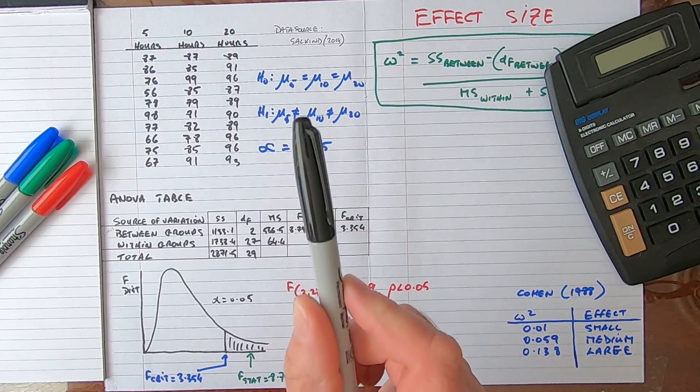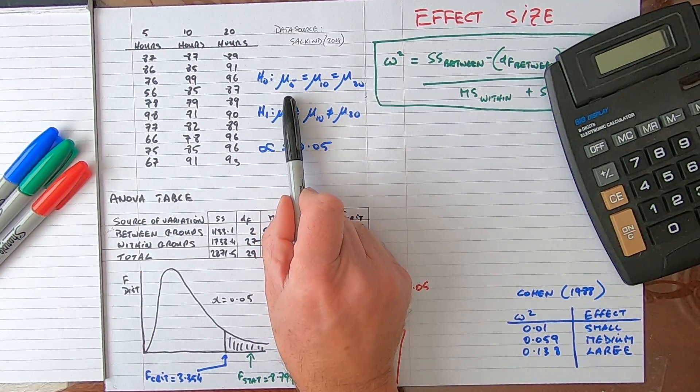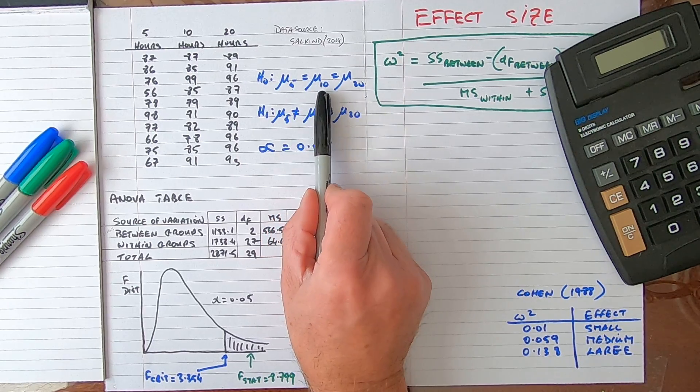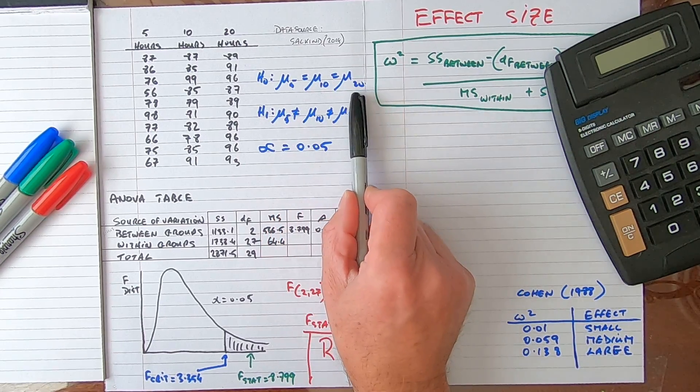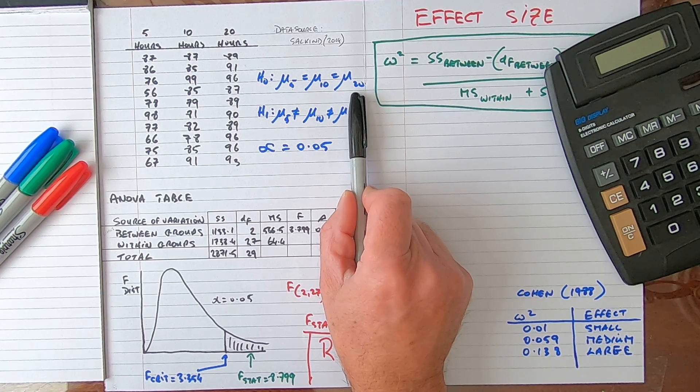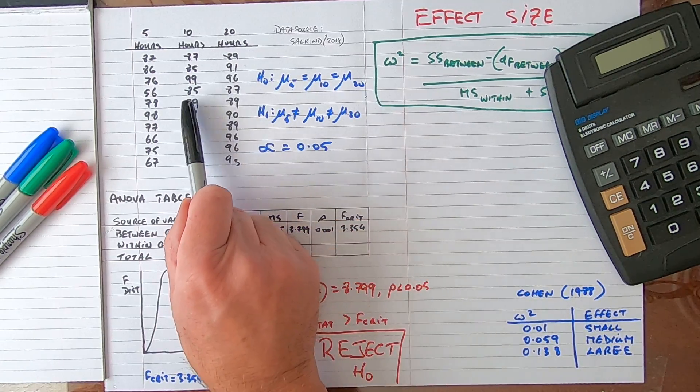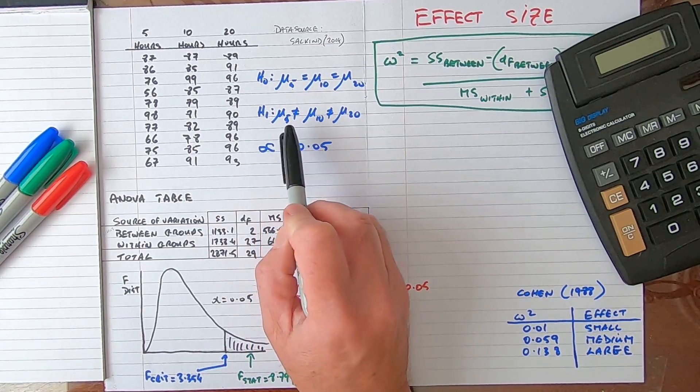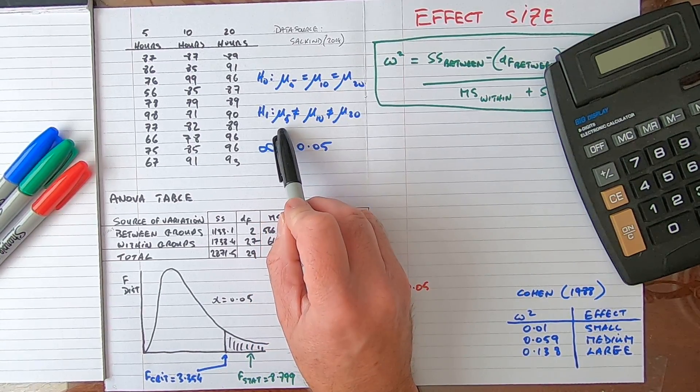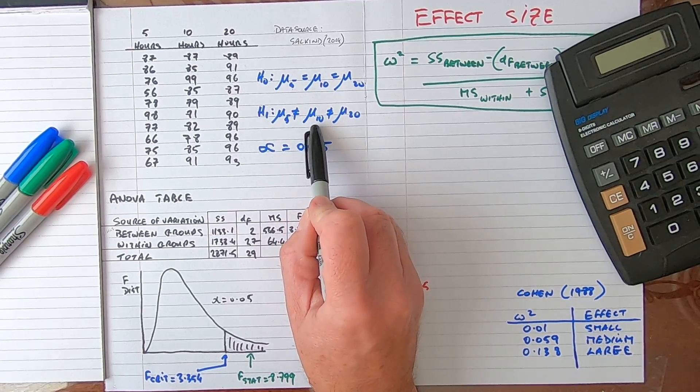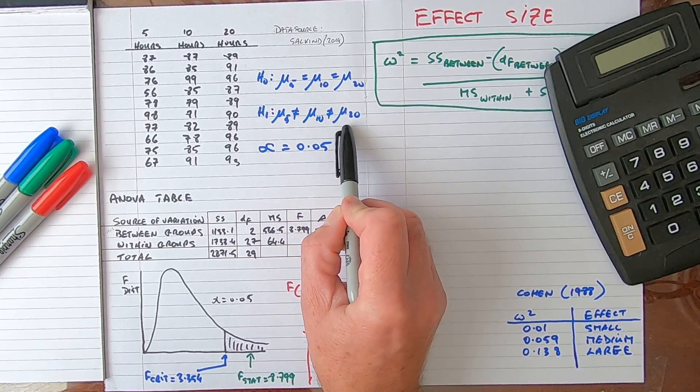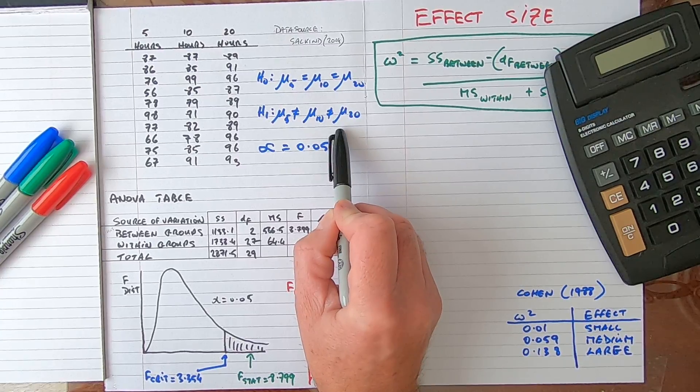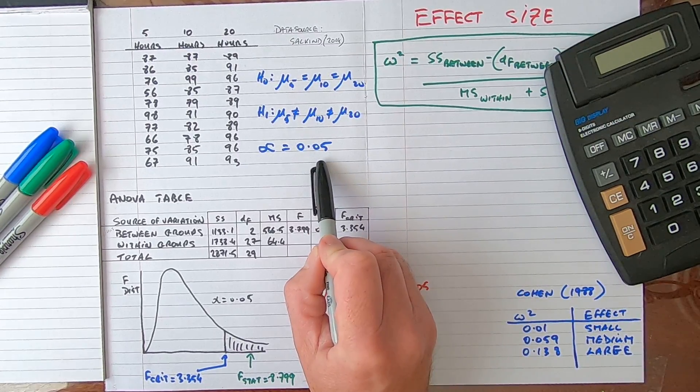Our null hypothesis with the ANOVA test is that the population mean of the five hour group is the same as the population mean of the ten hour group, which is the same as the population mean of the twenty hour group. In other words, there's no difference between the population means of these three groups. Our alternative hypothesis is that the population mean for the five hours is not equal to the population mean for the ten hours is not equal to the population mean for twenty. In other words, at least two of the population means are different. We've conducted this test at an alpha value of 0.05.